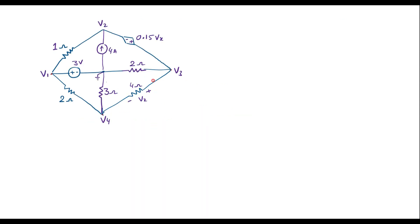This is the given circuit. In node analysis, the first step is to mark all branch currents. Let current through this branch be I1. In this branch there is already a current source, so we should ignore it. Let current through this branch be I2, through this branch be I3, through this branch be I4, and here we have one more branch — let current through it be I5.